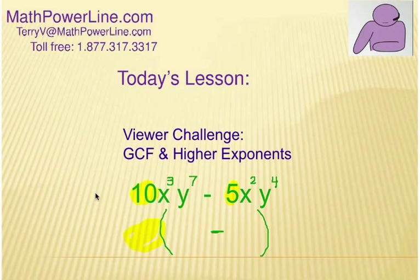Alright, let's hope that you tried this. We're going to look at our two coefficients, the 10 and the 5, first of all, and we want to ask what is the largest common factor there? Well, it's got to be a 5, so we're going to put a 5 on the outside.